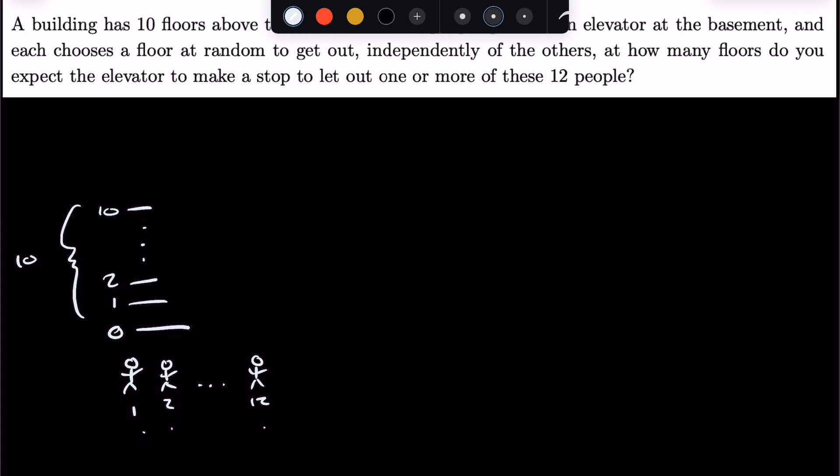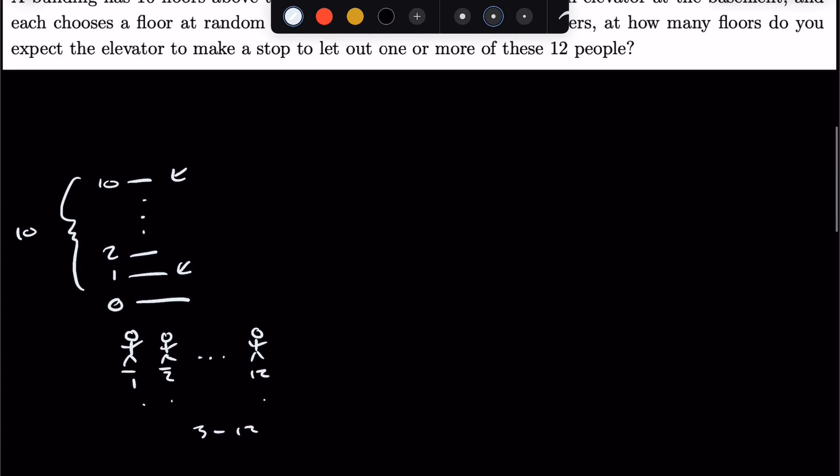So for example, if people 1 and 2 both get out on floor 1, and then everyone else, person 3 to 12, all get out on the 10th floor, this is a pretty extreme hypothetical, but the elevator is only stopping at 2 floors. And in that instance of our scenario, the number of floors, let's denote it as S, is equal to 2.